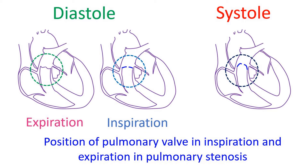In expiration, the right ventricular end-diastolic pressures are lower and pre-systolic doming of the pulmonary valve does not occur. Hence the systolic excursion of the pulmonary valve is greater and produces a prominent click. The click is nearer to the first heart sound in inspiration, apparently fusing with it, and moves away from the first heart sound in expiration.